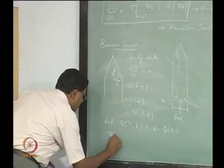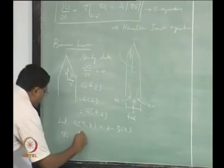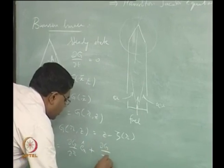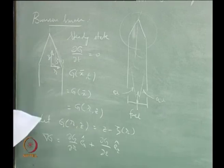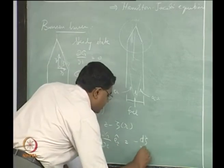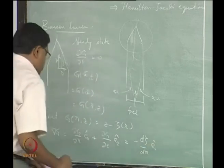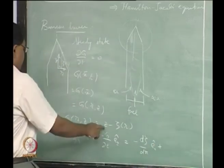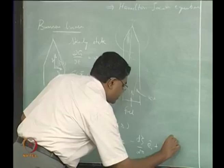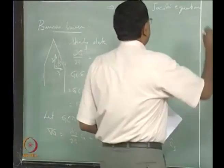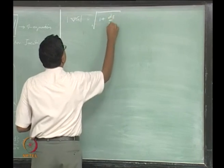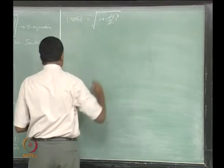Now we can write grad G. In cylindrical coordinates, grad G equals (∂G/∂R) times E_R-hat plus (∂G/∂Z) times E_Z-hat. So ∂G/∂R equals negative dZeta/dR times E_R-hat, and the Z term contributes 1 times E_Z-hat. Therefore, the magnitude |grad G| is simply the square root of 1 plus (dZeta/dR) squared.